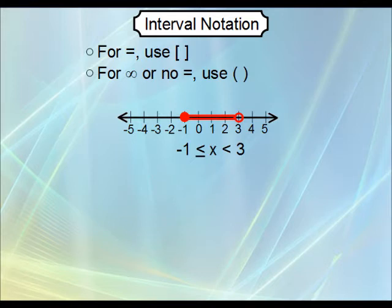As for interval notation, again, write your smaller number, the lower bound, then write your larger number, the upper bound. Because negative 1 is included, we use a bracket. Since 3 is not included, we use parentheses. So again, the bracket is for equals, and this is for not equals, or not including.